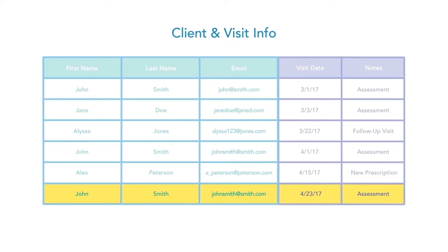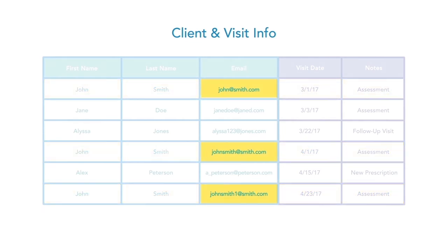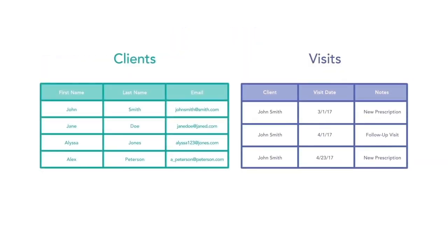Say you want to send him a reminder email for an upcoming visit. You'd have to search your spreadsheet and locate the row that belongs to John Smith. There are three rows that have a record for John Smith, one for each visit, and each record has a different email address. This could be problematic as you don't know which email to use in sending the appointment reminder.